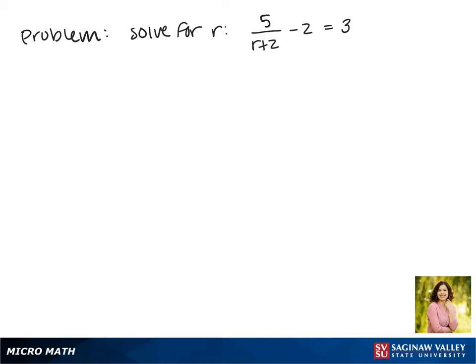Today we'll be solving the equation 5/(r+2) - 2 = 3. Our first step is to get rid of that denominator by multiplying by the quantity (r+2), and we have to do that on both sides.